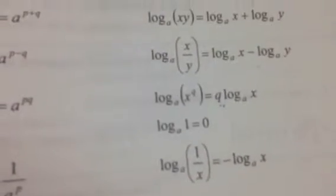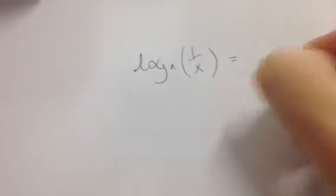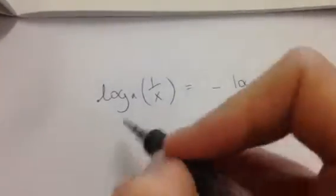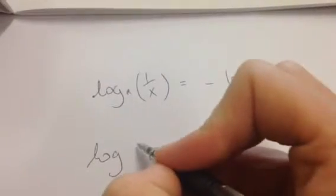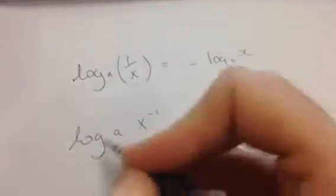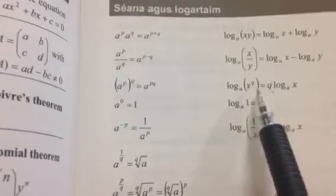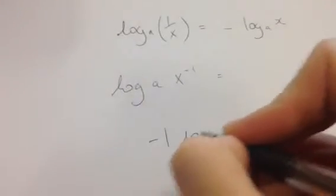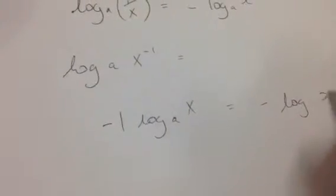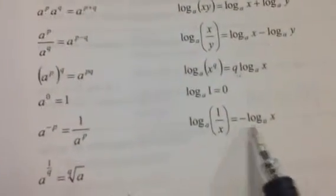The next rule: log of (1 over x) in base a equals minus log of x in base a. Working from the left side, my rules of indices say 1 over x is the same as x to the power of minus 1. Using rule 3, I can bring the minus 1 down in front, giving minus 1 times log of x in base a, which is exactly minus log of x in base a — confirming the rule.